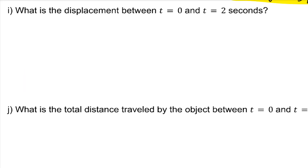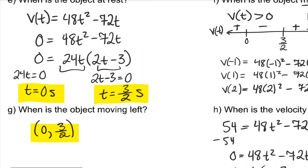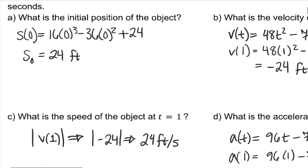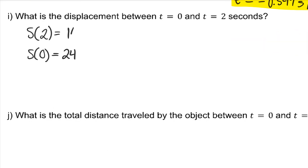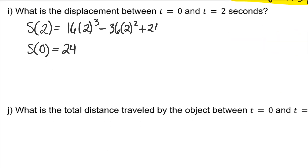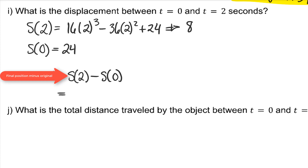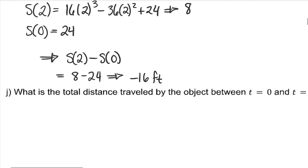What is the displacement between t equals 0 and t equals 2? Displacement is final position minus original position. We already found s of 0 — also known as s sub-zero — which was 24. Our displacement comes out to negative 16 feet.